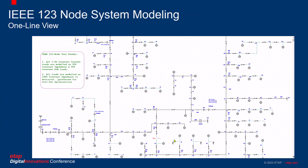Putting them all together, we have this one-line view of the IEEE 123 node distribution system. Of course, we have some modifications which are listed in this text box for ease of use. We are able to see the utility substation, the voltage regulators at the beginning, a lot of three single-phase branches, as well as the single-phase shunt capacitors towards the end of the system. With this, we end the modeling section of the presentation.